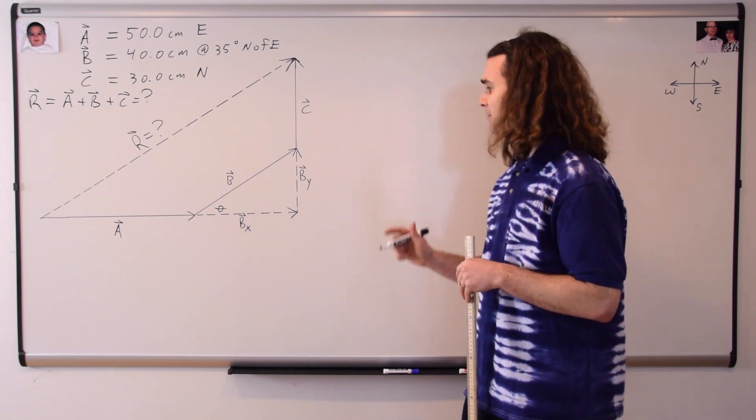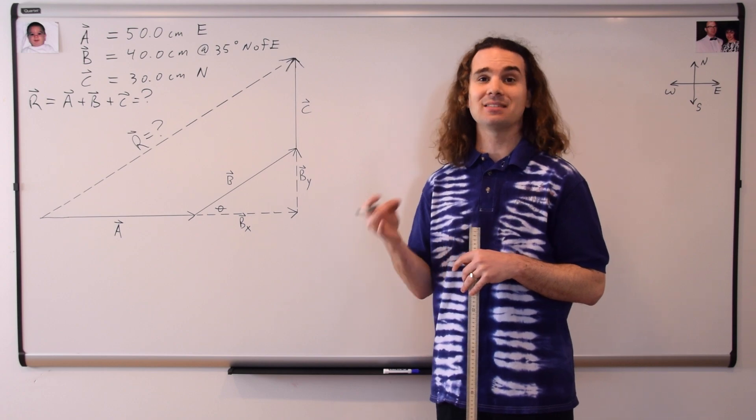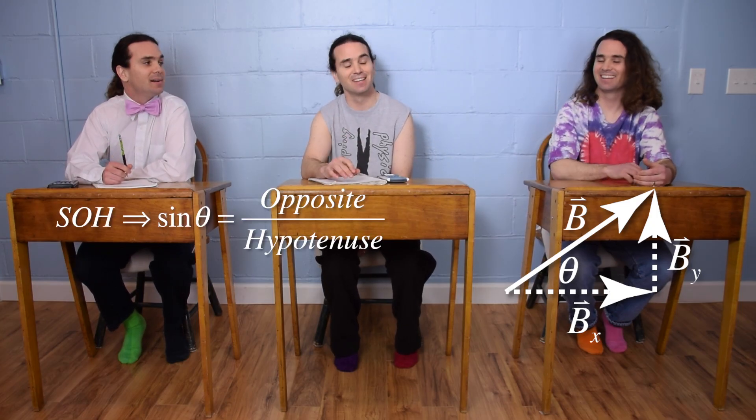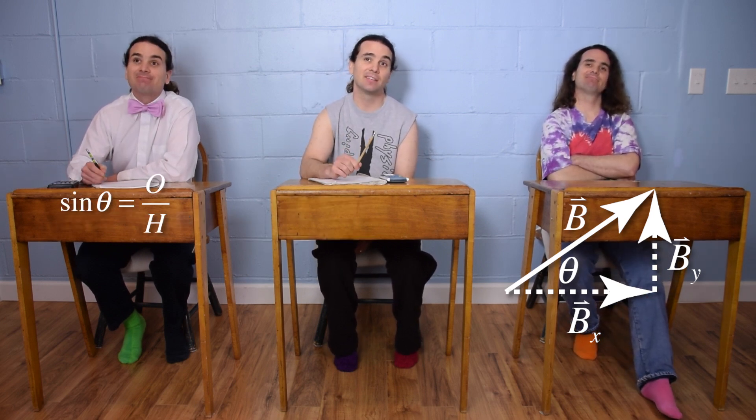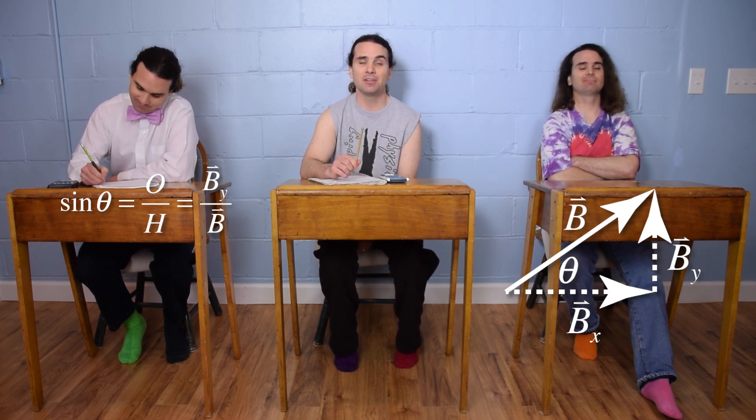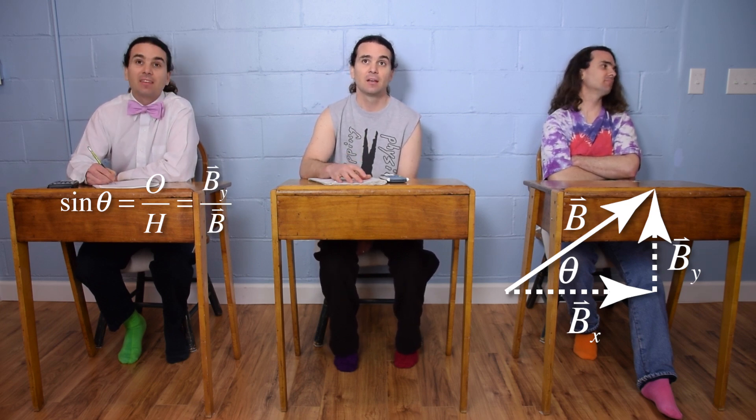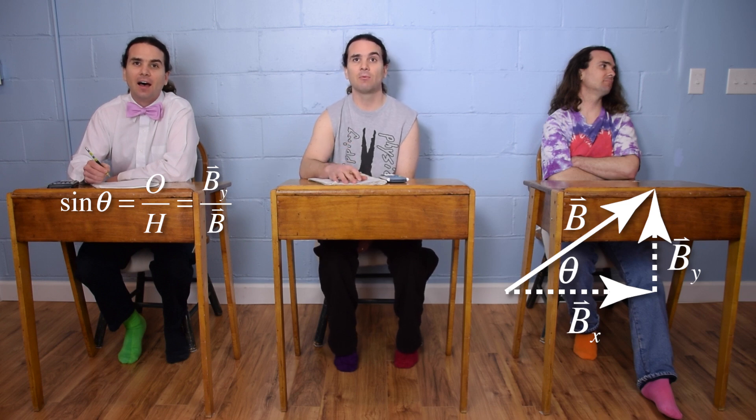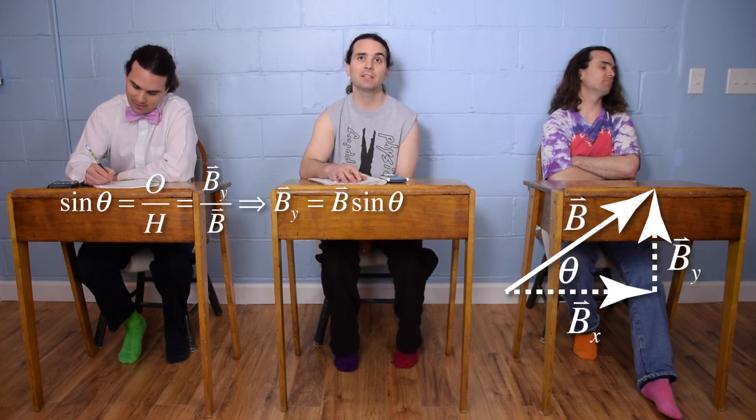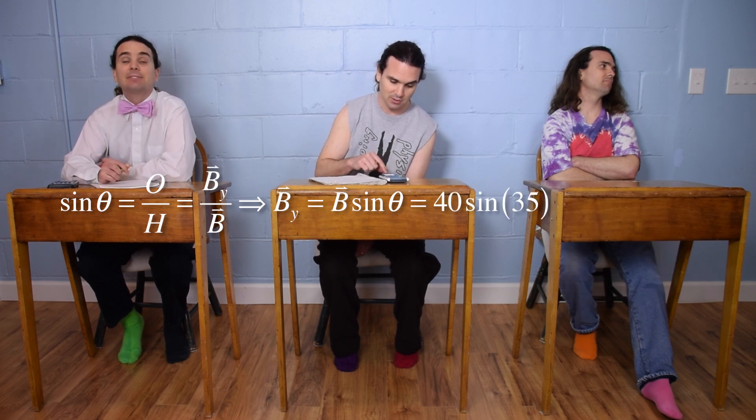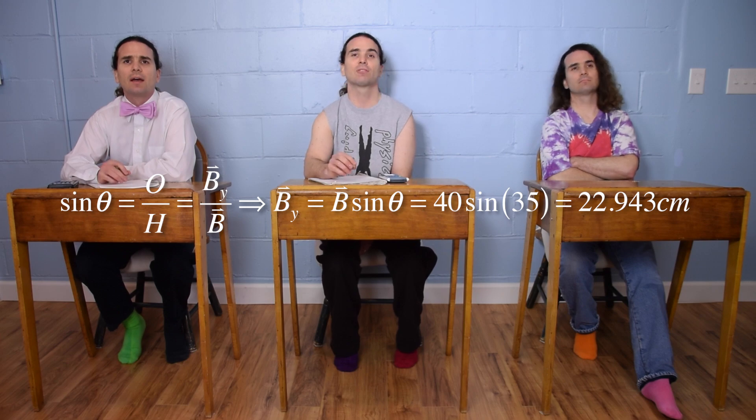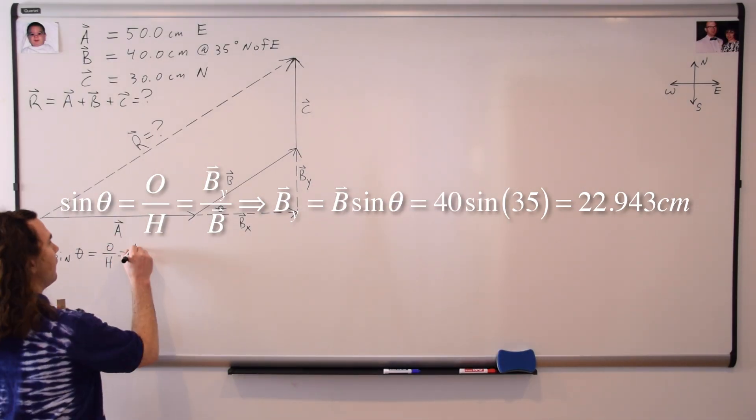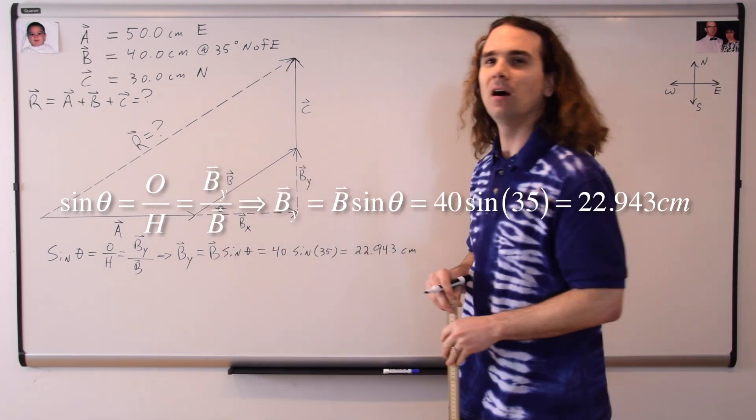Bobby, could you please break vector B into its component vectors in the x and y directions? We can use sine theta equals opposite over hypotenuse, and opposite the angle is B in the y direction, and the hypotenuse is the vector B, multiplied by B to solve for vector B in the y direction, and B sub y equals B times the sine of theta, or 40 times the sine of 35, which is 22.943 centimeters. Correct.